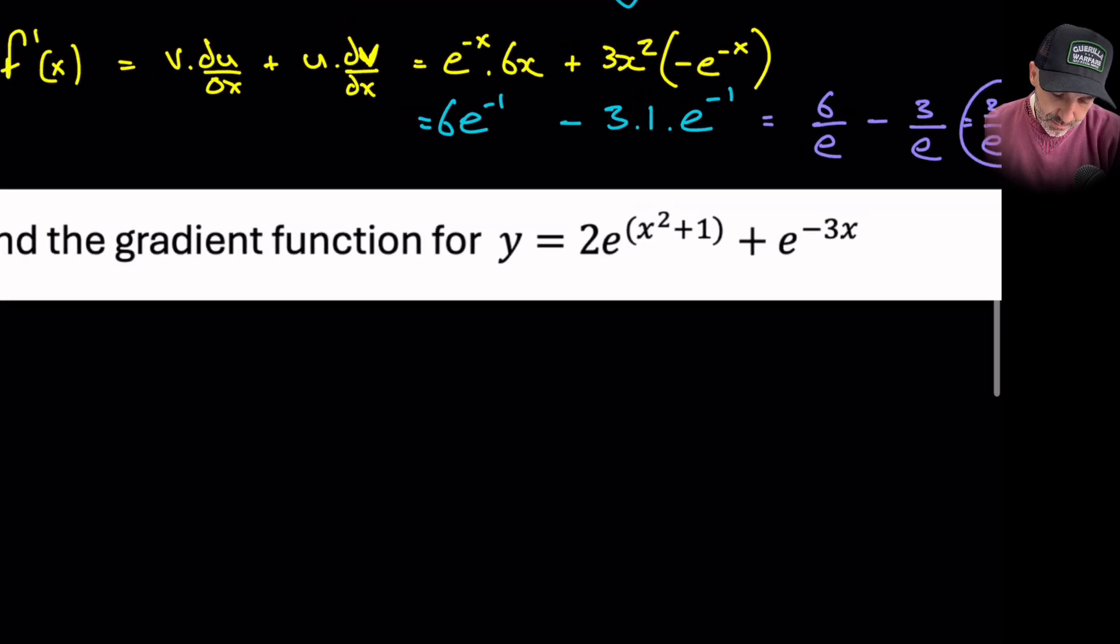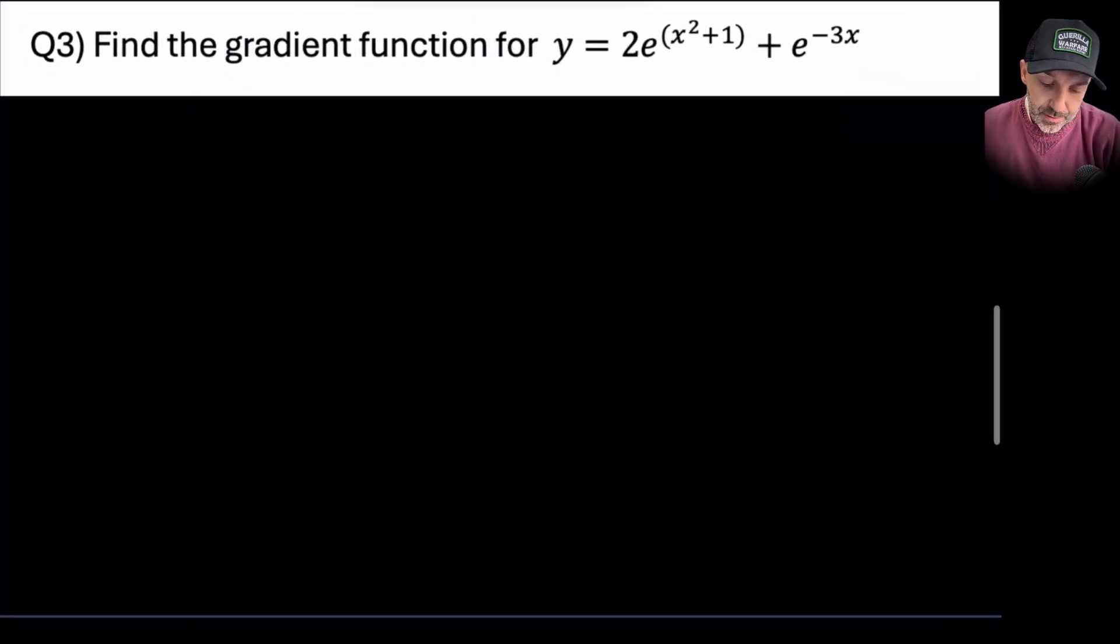Okay, let's go down to question 3. Find the gradient of the function. So we've got an exponential of 2, so there's no product rule here. We are simply going to say that the derivative of y then is equal to 2 times e^(x^2+1) times by the derivative of the power.